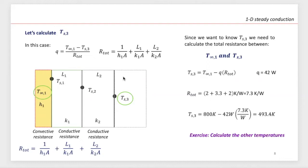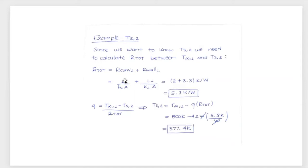Now calculate TS2. How many resistances for TS2? Two resistances: one convective and one conductive, because those are the resistances between the temperatures involved — our driving force. Two resistances between those two temperatures. Total resistance 5.3 Kelvin/Watt, and heat transfer rate remains constant under steady state. The temperature at surface 2 is going to be approximately 577.4 Kelvin.